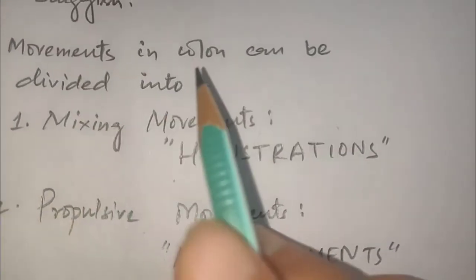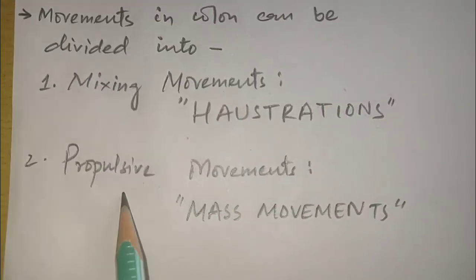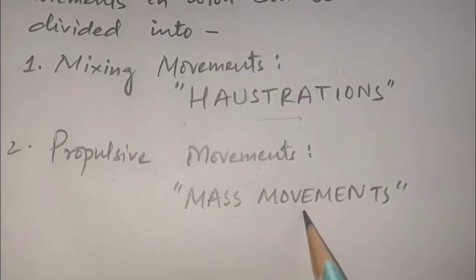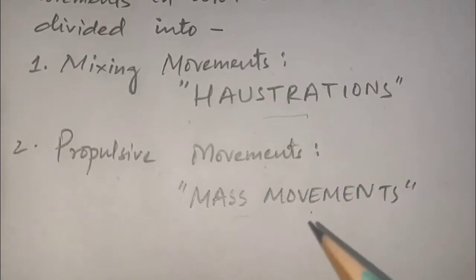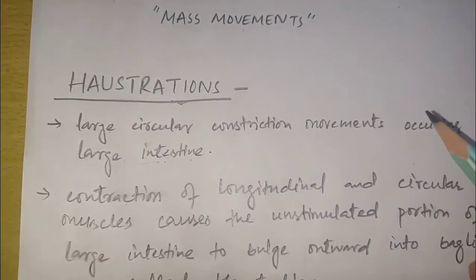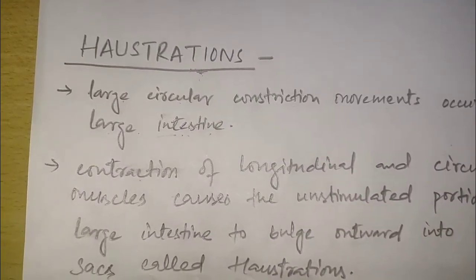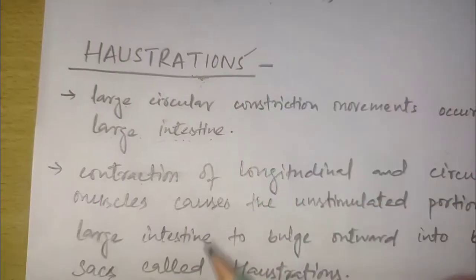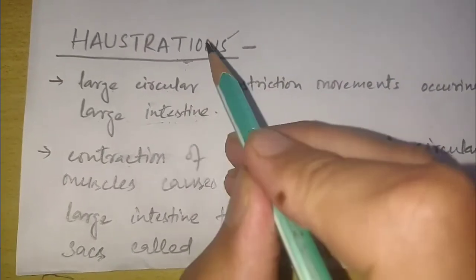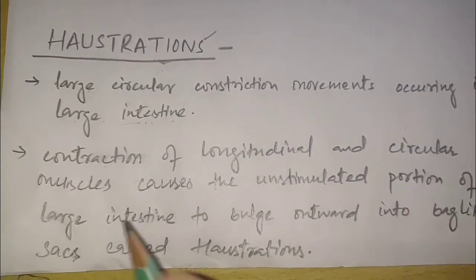Movements in colon can be divided into mixing movements and propulsive movements. Mixing movements are known as haustrations, while propulsive movements are known as mass movements. Just as in small intestine mixing movements are called segmentation, in large intestine mixing movements are called haustrations. These are large circular constriction movements.